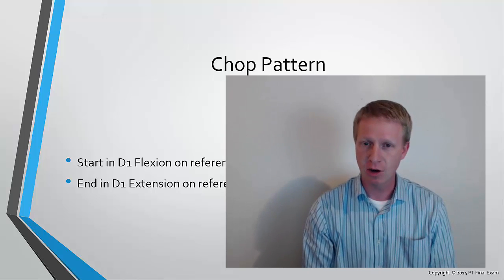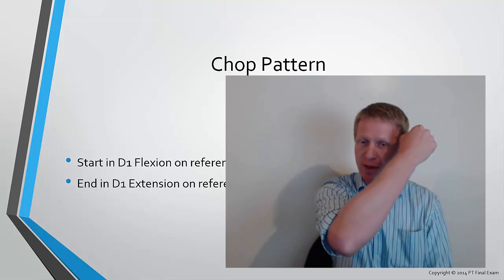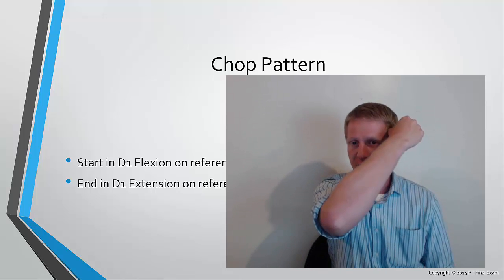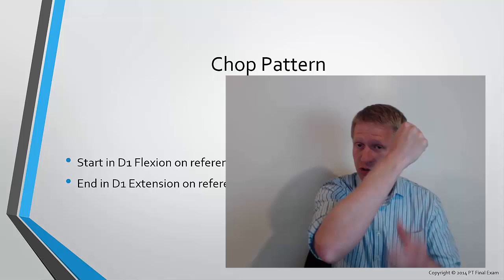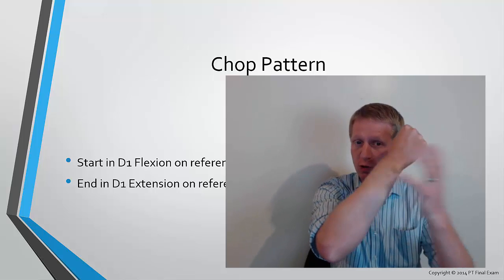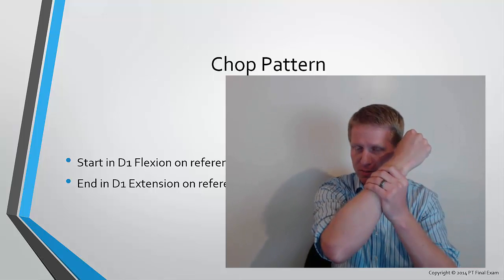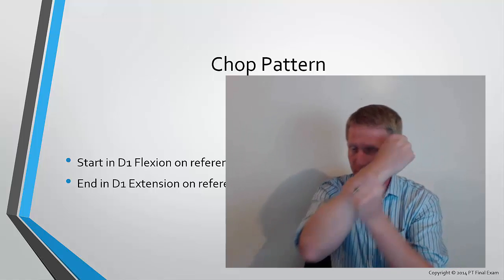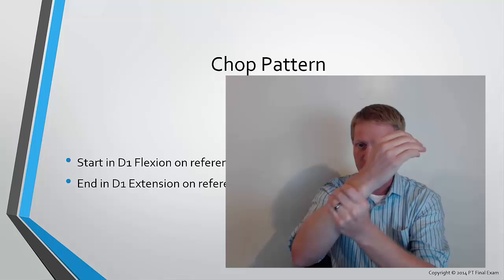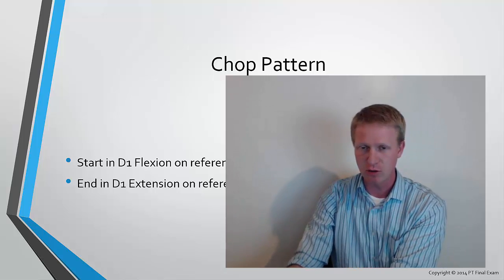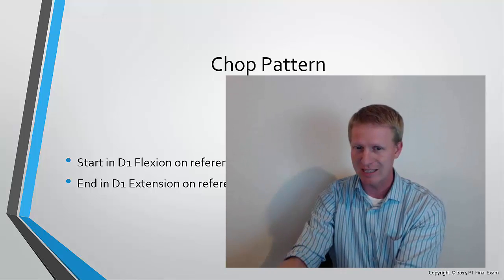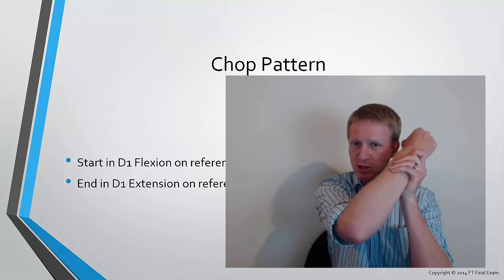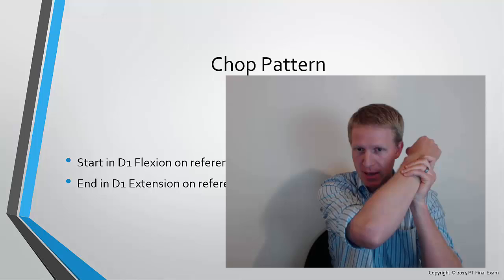So the chop pattern technically starts in a D1 flexion pattern on the reference arm, right arm, reference arm, start with a fist, and then you're coming down. Now the reason it's a chop pattern is because you're allowing your good arm or your non-reference arm to assist it as it comes down into a chop. So as you start with a fist, coming down, you're opening your hand, coming to your side in D1 extension, starting at the ear, coming down. That's what is called a chop pattern.